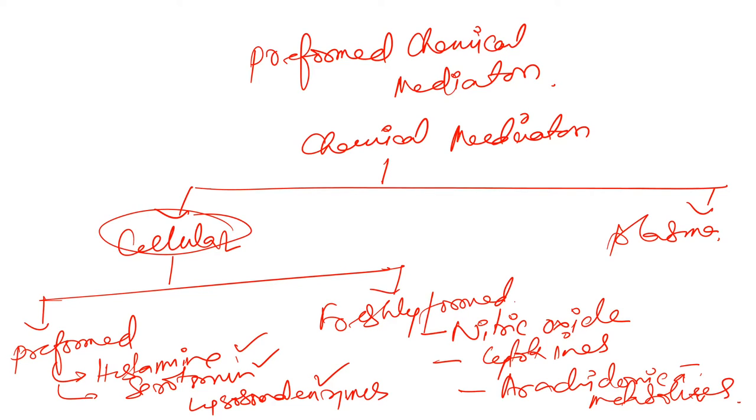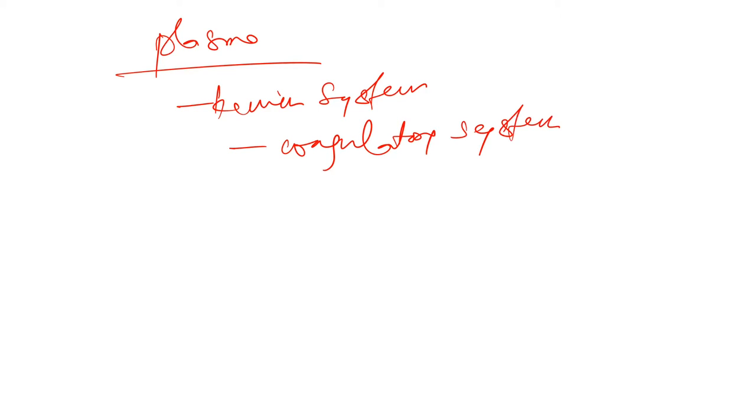That's cellular. Cellular has preformed and freshly formed. Now plasma, what comes in plasma? In plasma we have got kinin system, then we have got coagulatory system, then we have got complementary system. So now we will be talking about preformed cellular mediators. We will be talking later about plasma and other things. So let's start with cellular preformed mediators.